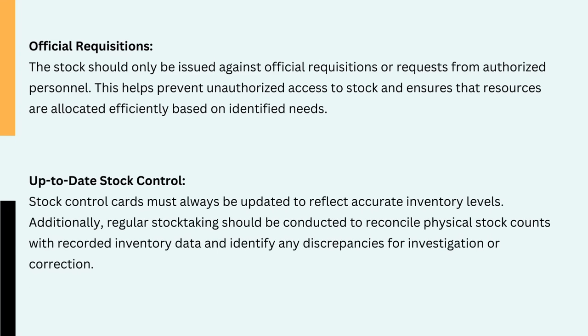6. Official requisitions. Stock should only be issued against official requisitions or requests from authorised personnel. This helps prevent unauthorised access to stock and ensures that resources are allocated efficiently based on identified needs. 7. Up-to-date stock control. Stock control cards must always be updated to reflect accurate inventory levels. Regular stock taking should be conducted to reconcile physical stock with recorded inventory data and identify any discrepancies for investigation or correction.